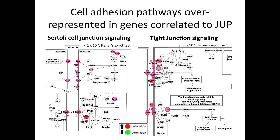We can bring some of these pathways up. If a gene is colored here, I found it in my 152 genes. This is Sertoli cell junction signaling — all these proteins are on the outside in cell connections. This gives context to what JUP is doing. Anyone know what a Sertoli cell is? Sperm, yes. That's another problem with pathways — I'll tell a researcher that Sertoli cell junction signaling is on fire, and they say they don't work on sperm. But it's just cell adhesion. We give pathways names based on where we find them, but they do a lot of other things.